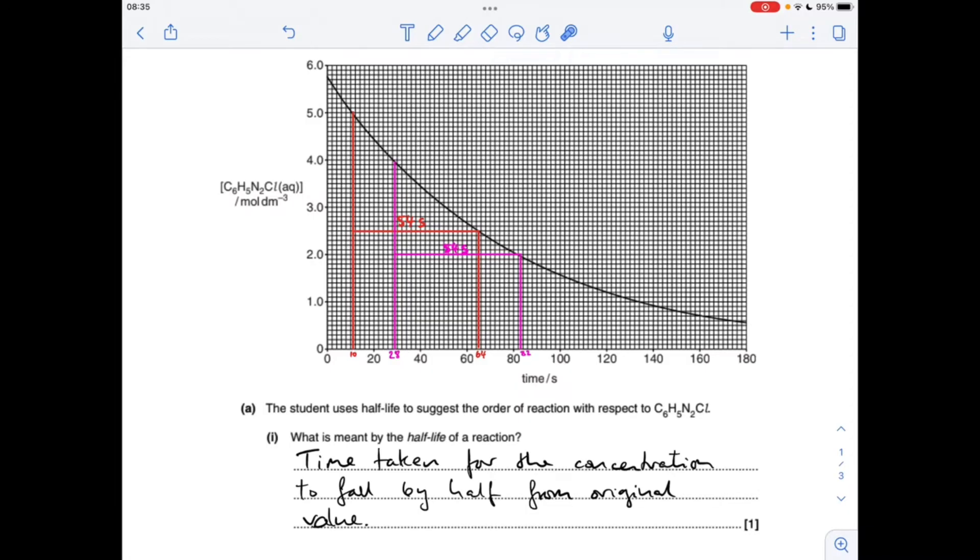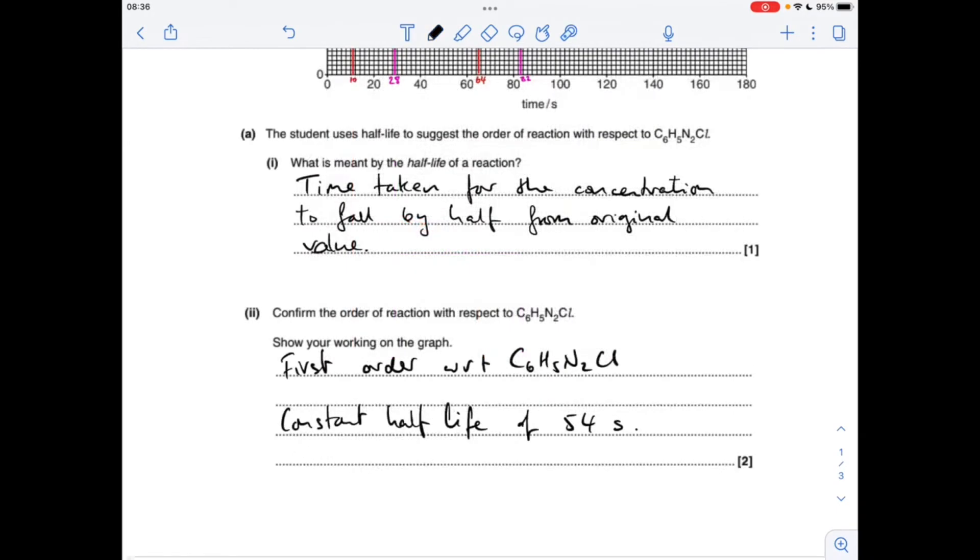So from that we can say that the order of reaction is 1 because the half-life is constant. So obviously the examiner is going to want to see the working out on your graph and then the summary in your written answer.